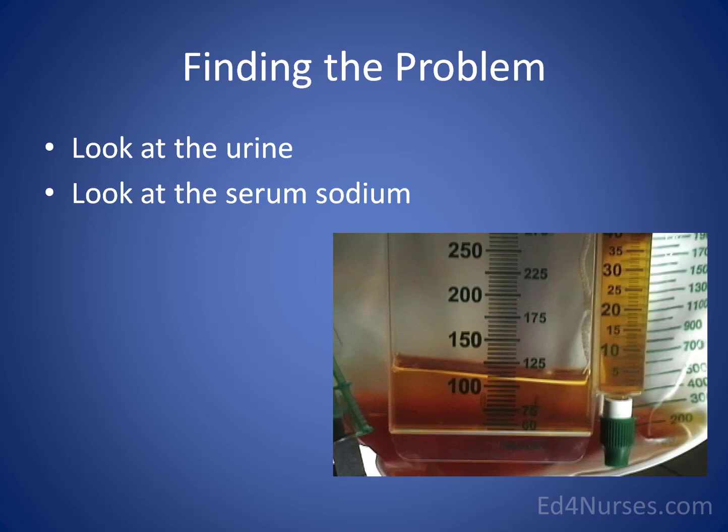In the hospital, we need to identify abnormal urine patterns to diagnose these conditions. There are two things to assess: the urine and the serum sodium. If you walk into your patient's room and notice a scant amount of concentrated urine in the Foley catheter, you're probably thinking the patient is dehydrated — and to validate that, you'd look at the serum sodium, which you would expect to be high.